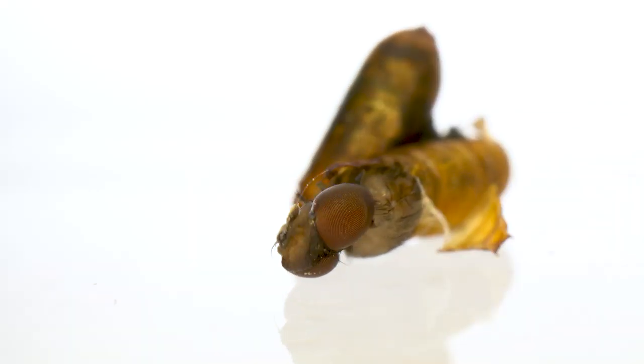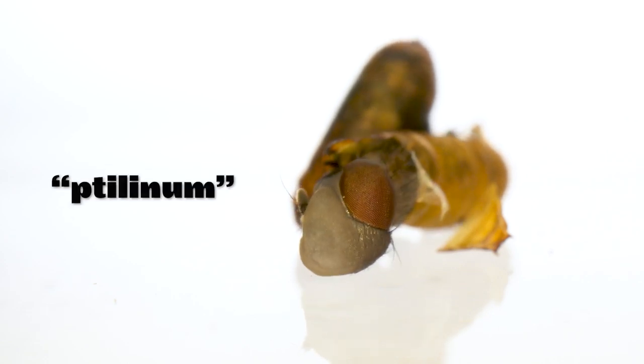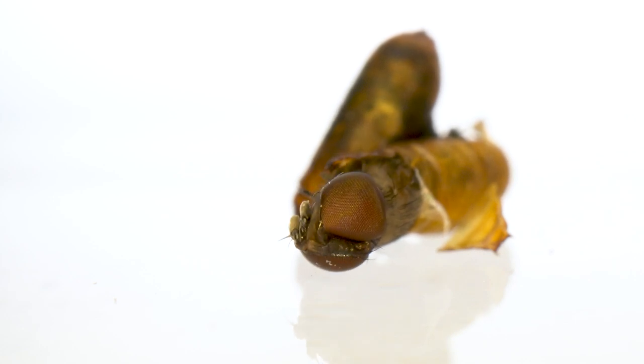They pump body fluid into their head and pop out the sac between their eyes called the ptilinum. The ptilinum is a structure that is used only during this part of the fly's life to push their way out of that pupal case.